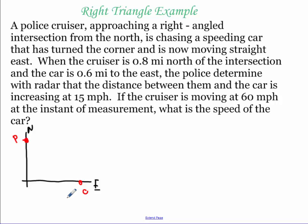When the cruiser is 0.8 miles north of the intersection and the car is 0.6 miles to the east, the police determined with radar that the distance between them is increasing at 15 miles per hour. If the cruiser is moving at 60 miles per hour at the instant of that measurement, what is the speed of the car?